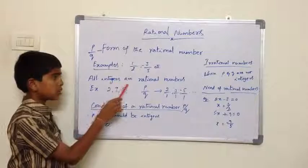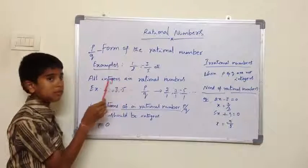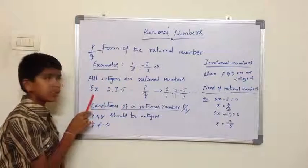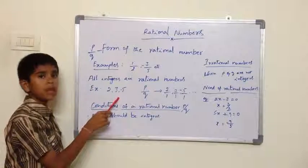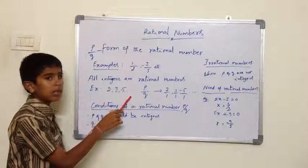All integers are rational numbers. Here are some examples: 2, 3, minus 5, etc.